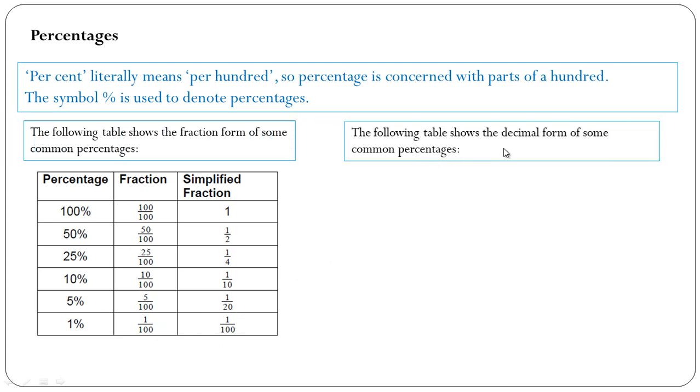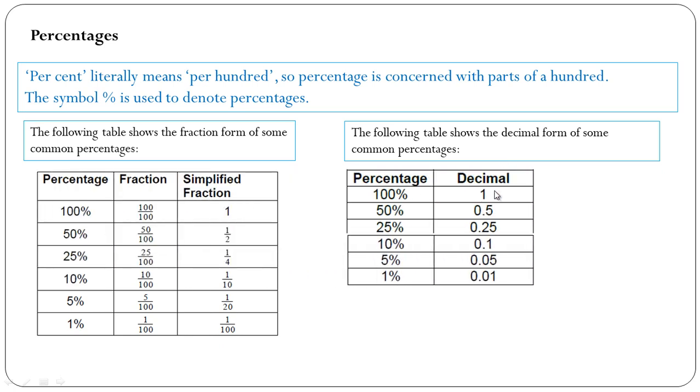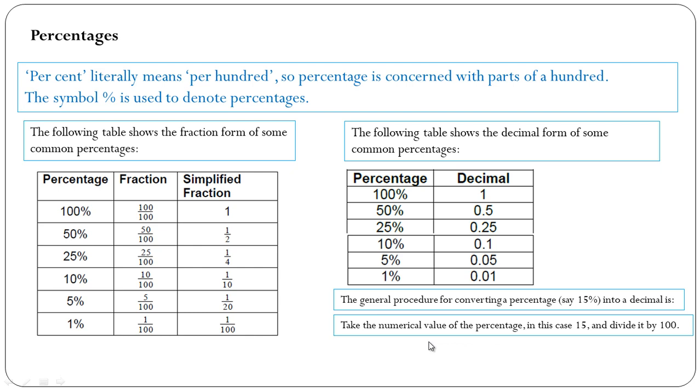The following table shows the decimal form of some common percentages: 100% equals 1, 50% equals 0.5, 25% equals 0.25, 10% equals 0.1, 5% equals 0.05, and 1% equals 0.01. The general procedure for converting a percentage, say 15%, into decimal is to take the numerical value of the percentage, in this case 15, and divide it by 100. So 15% equals 0.15.